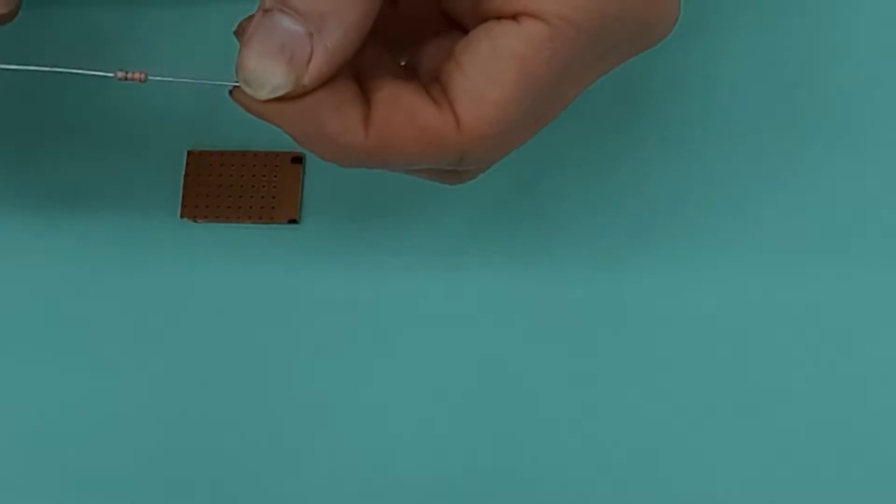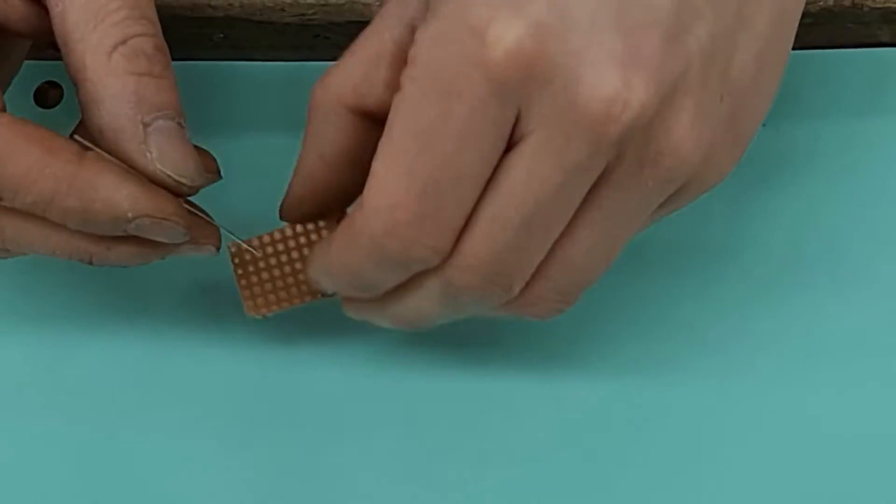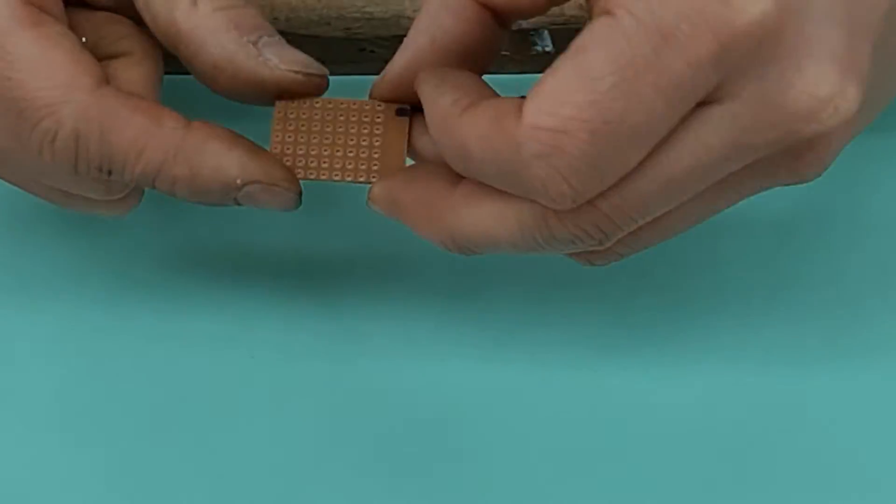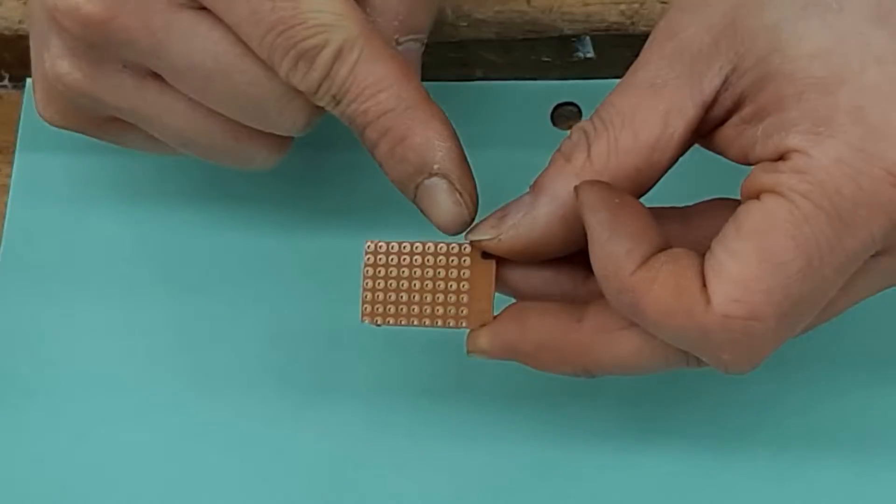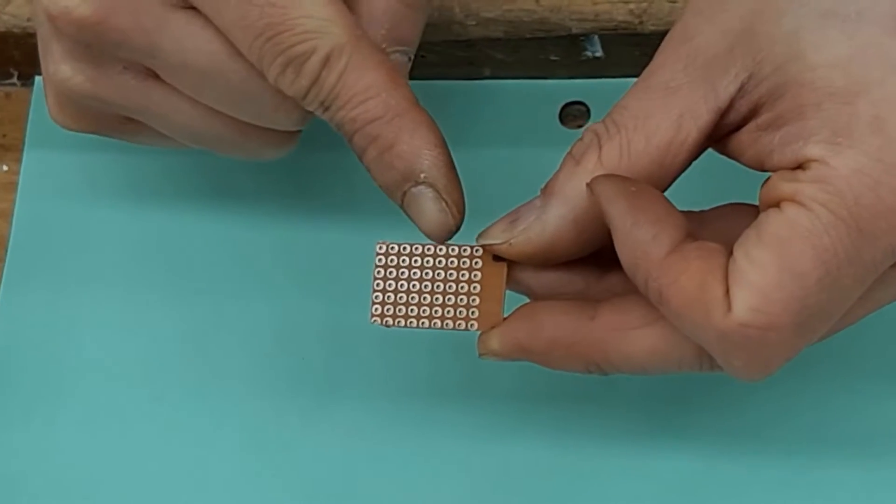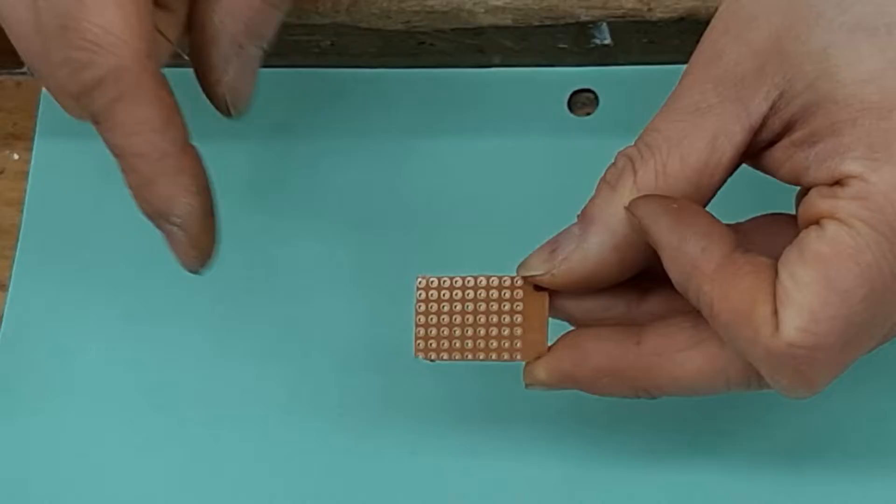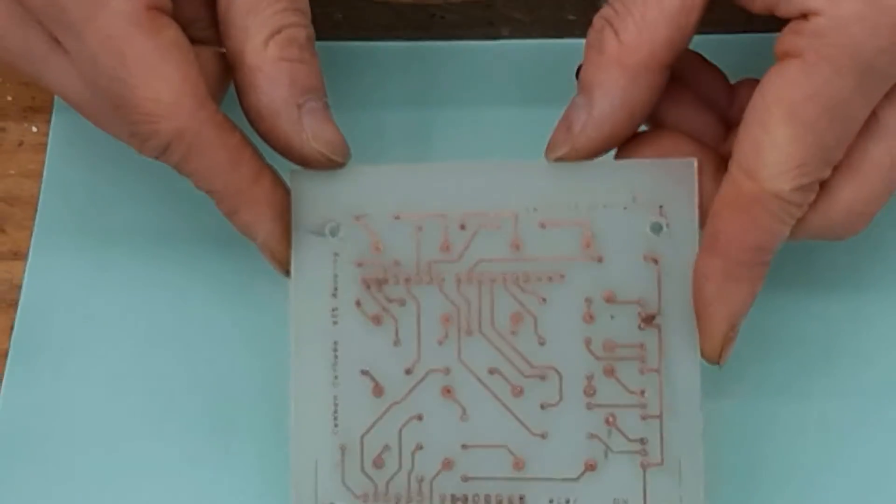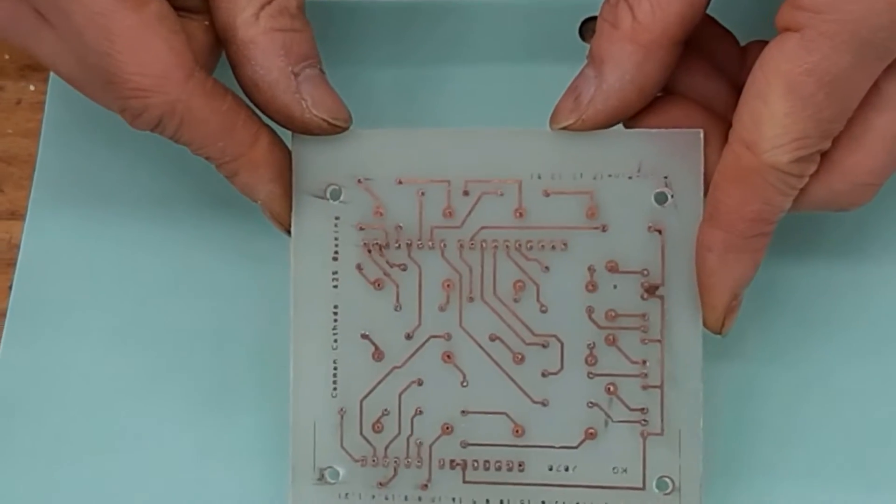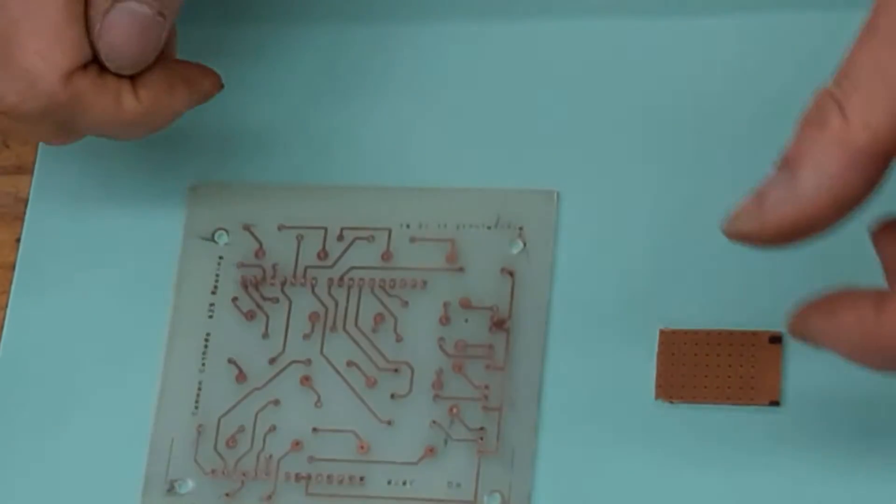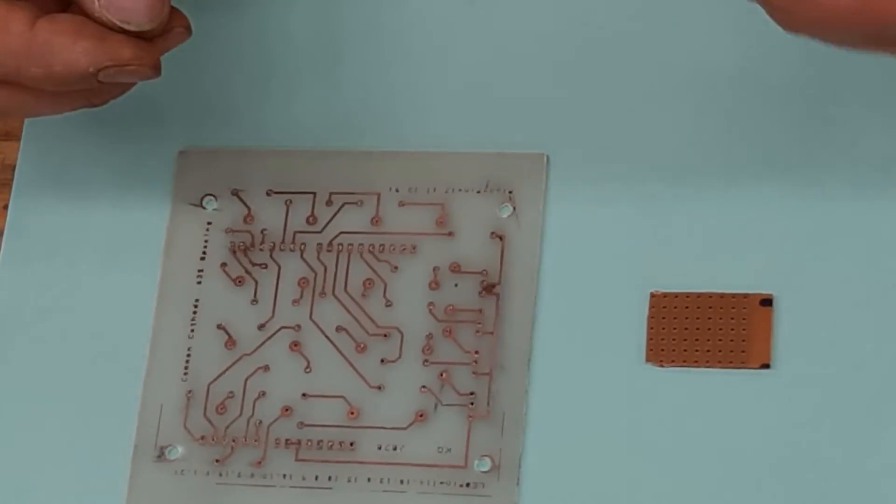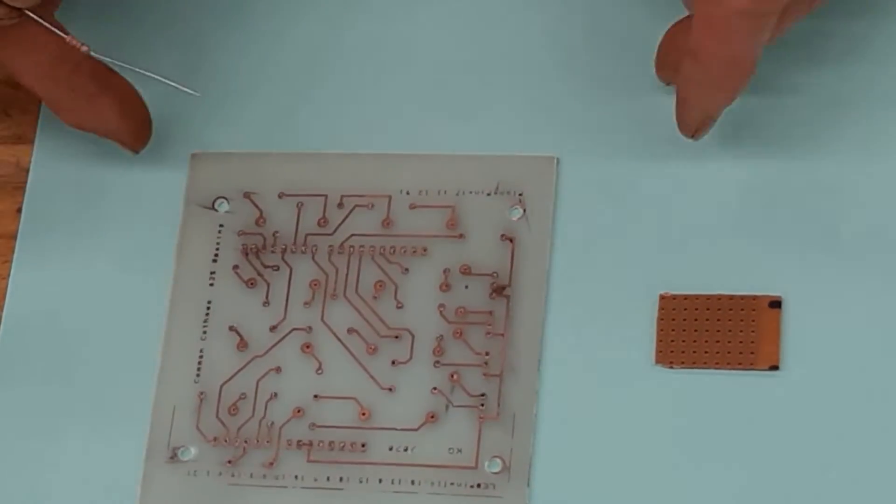The next type of soldering you're going to do, and the most common type, is taking electronic components and putting them into your circuit board. Your circuit boards are either perf boards like this with individual holes all lined out, or the printed circuit boards that you've made in my class. Whether you're doing these ones or these ones, I'm going to go over how to solder components on without roasting your board.